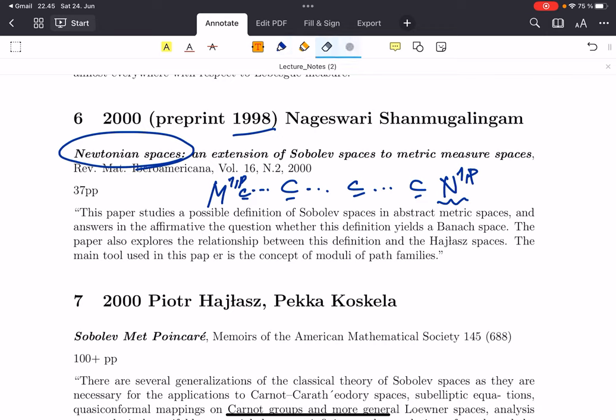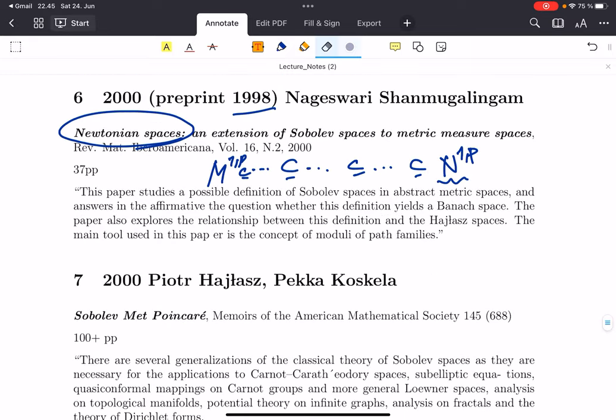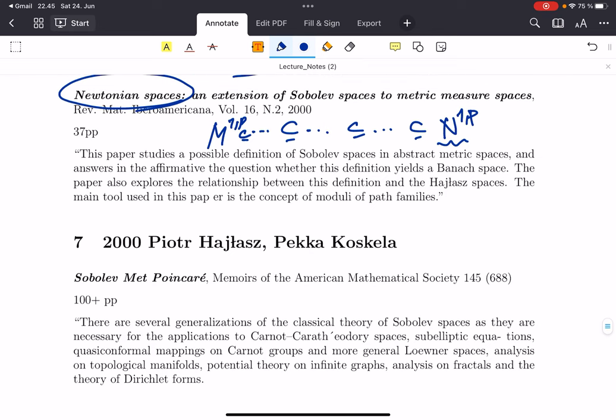This paper takes the notion of upper gradients from the work of Heinonen and Koskela and uses that to define Sobolev functions. One nice thing in this paper, one important theorem, is that you do get a Banach space from many different definitions of Sobolev spaces lead to a Banach space. Then the relationship between this definition and the Hajłasz space—there was also the Cheeger space—is proved. Different kinds of this space is isometric to that or is isometrically embedded in that, which effectively compares these different classes of Sobolev spaces.